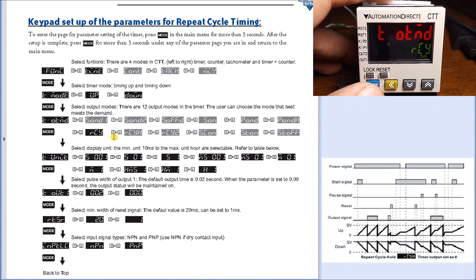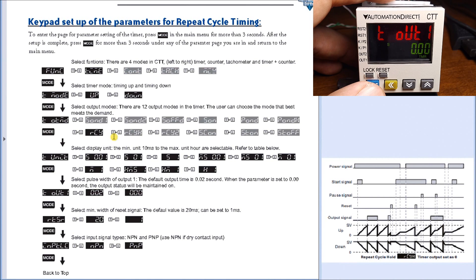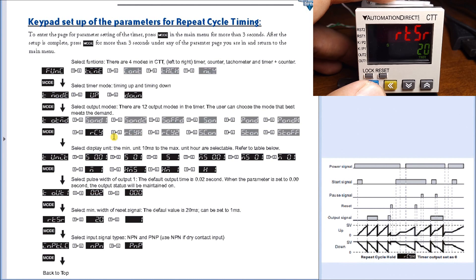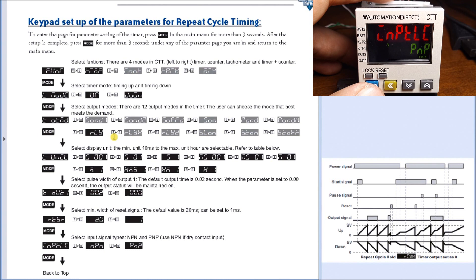And it changes it to that cycle. Then what we'll do is hit the mode once again. There's our time units, which is set for 0.1 of a second. Then we have our output, which is set for 0, which is maintained output. Time mode again, our reset is 20 milliseconds. And then we have PNP as our input type selected.